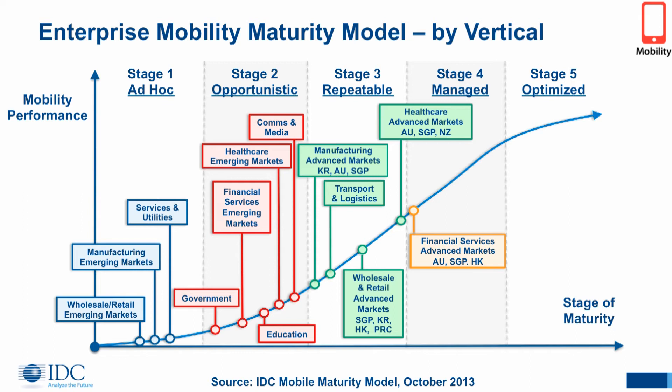The next thing we wanted to do was look at it by verticals and see which industry verticals are leading the way. In the ad hoc phase, a lot of these come out of emerging markets — manufacturing, wholesale, and retail — they're just not advancing technology, and a lot of times because their processes are paper-based. When you get to the opportunistic phase, you start seeing some maturity, with healthcare especially starting to leverage it, even in emerging markets, to change the way they care for patients. In the repeatable phase, manufacturing is quite advanced, leveraging logistics platforms, machine-to-machine, and supply chain management to streamline business operations. Retail, which China and Hong Kong were far behind in overall, has been driven forward because of shopping culture, with mobility being leveraged by retailers to change the customer experience in-store.